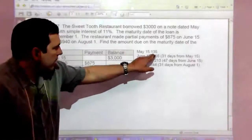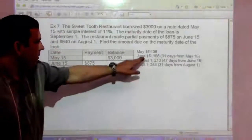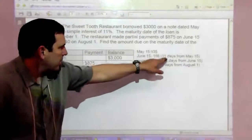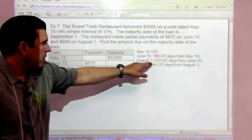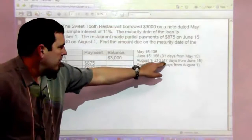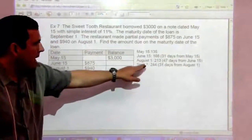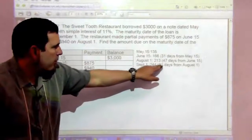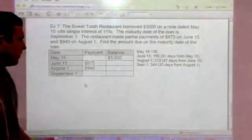I looked it up here. May 15th is day 135, June 15th is day 166, that's 31 days. August 1st is day 213, that's 47 days from the previous payment. And September 1st is day 244, 31 days from the previous payment.